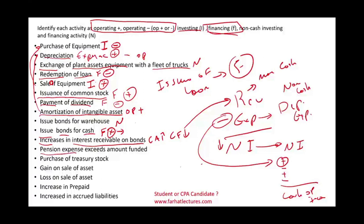Pension expense exceeds amount funded: the pension expense is definitely operating. If pension expense is not paid — if you recorded the expense and accrued it — it's going to increase cash flow, just like depreciation expense. It's an expense, but it's not being paid in cash.